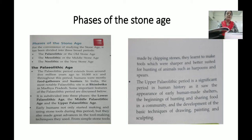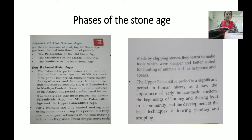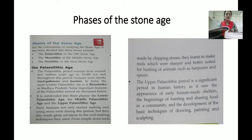The Upper Paleolithic period is a significant period of human history, as it showed the appearance of early humans making shelters and the beginning of hunting and sharing food in a community. It also saw the development of basic techniques of drawing, painting, and sculpting. This marks the first part of the Paleolithic Age.